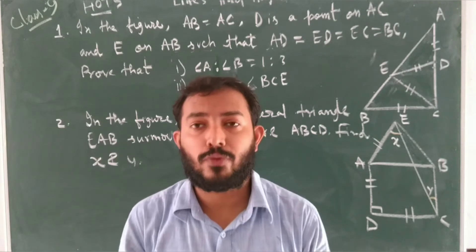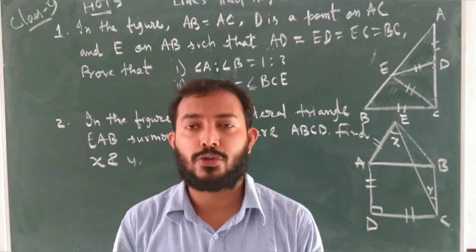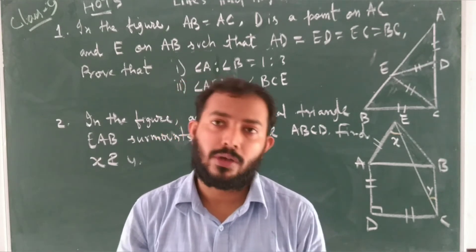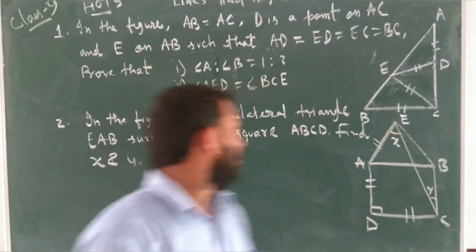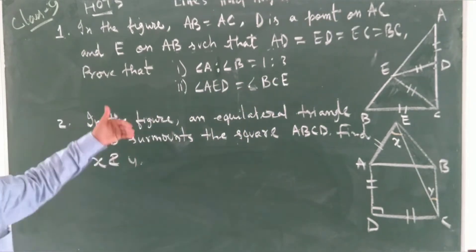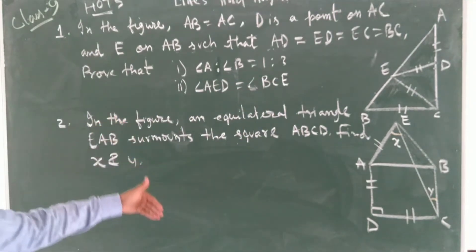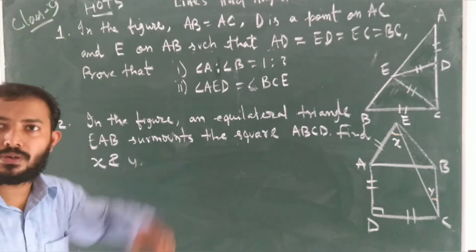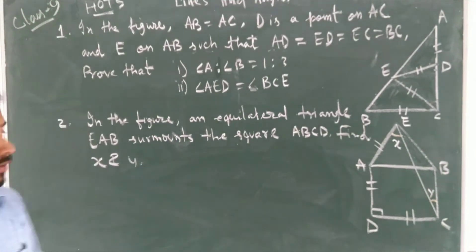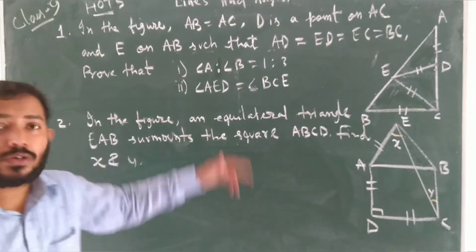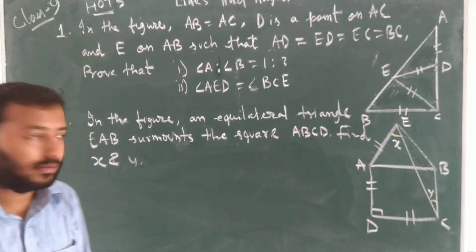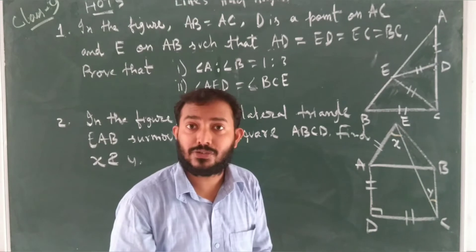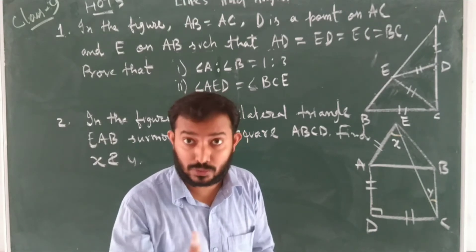Namaste students. Here we have two hot problems related to lines and angles. We'll go with the second problem first, then the first. In the figure, we have an equilateral triangle, and we know that each angle of an equilateral triangle is 60 degrees — we'll use that concept.